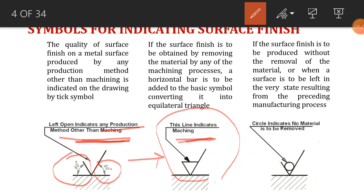The third symbol is an open arrow with a circle in the middle, indicating that no material is removed. In this process, whatever surface is produced by a previous process can be left as is without any further machining. These are the three different symbols used on any drawing paper so that the production manager or production engineer can understand how they have to produce the component.